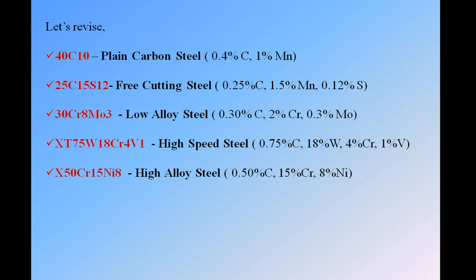Next is high alloy steel. When anything starts with X — for example X50Cr15Ni8 — it is always high alloy steel. The first number 50 divided by 100 gives 0.5% carbon. Similarly, elements like chromium and nickel followed by numbers are taken as they are — 15% chromium and 8% nickel. This is what we studied in the last lecture.